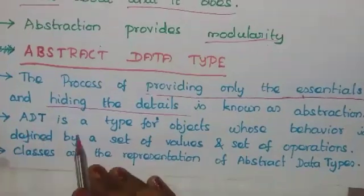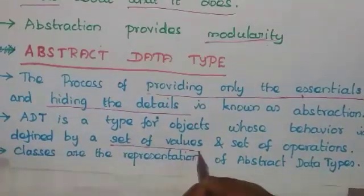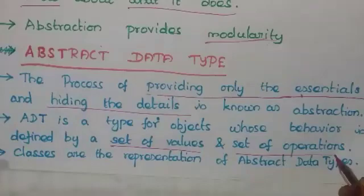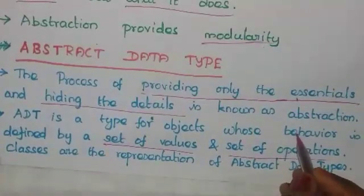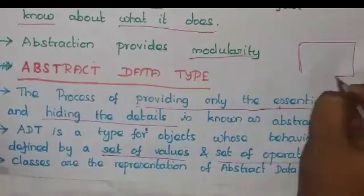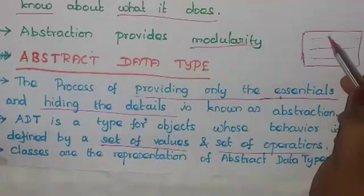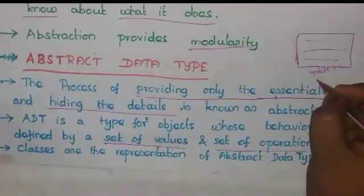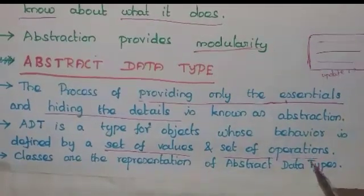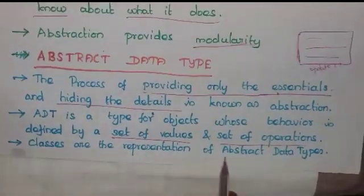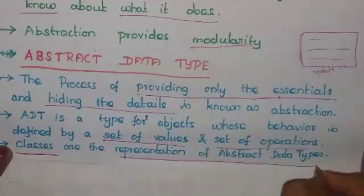ADT means Abstract Data Type. An abstract data type is a type for objects whose behavior is defined by a set of values and a set of operations. ADT is composed of some collection of data and a set of operations on that data — we can update, define, and perform any operations. Classes are the representation of abstract data types.